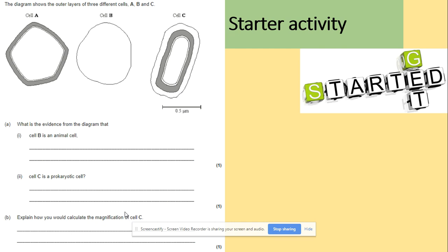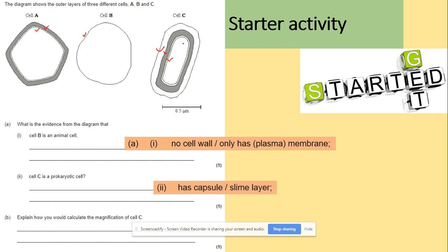My advice for questions like this is to start from the middle. For instance here, we've got only one layer so it has to be cell membrane, cell surface membrane. Here we've got one, two, and here we've got one, two, three layers. So evidence for cell B then, they don't have a cell wall, they only have plasma membrane. Cell C then has a capsule, so that layer number three is a capsule.